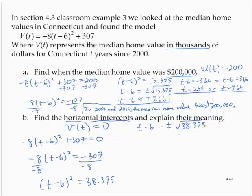Now the square root of 38.375, I'll round it to two decimal places, is 6.19. So t-6 is approximately equal to positive or negative 6.19. So then t-6 is equal to -6.19, or t-6 is equal to positive 6.19. So then t would equal -0.19, or t would equal 12.19.